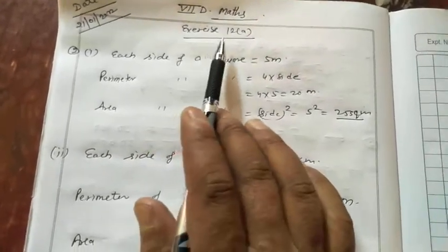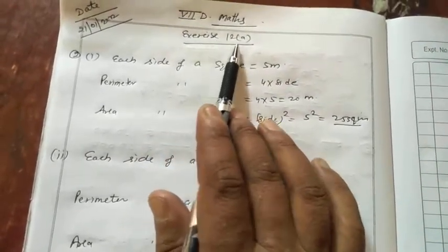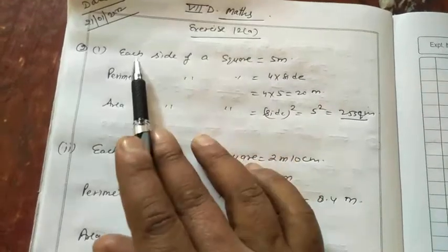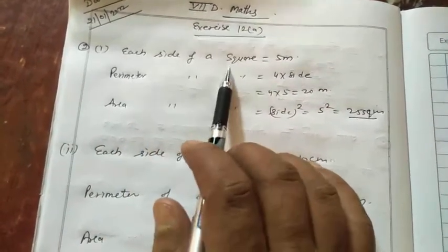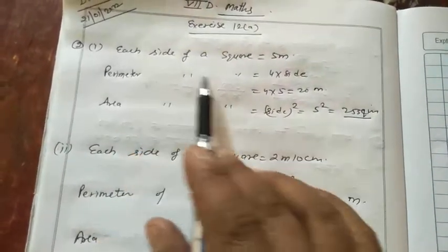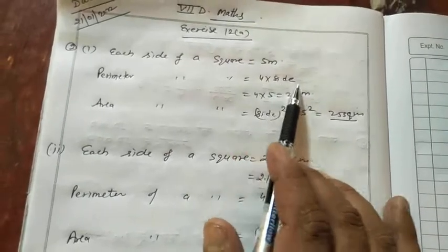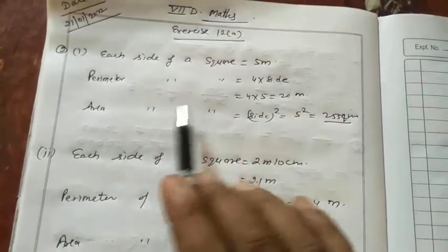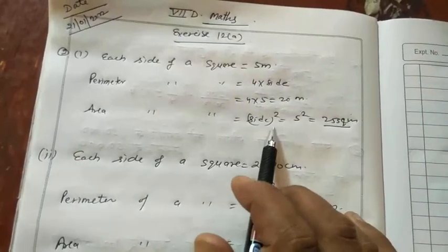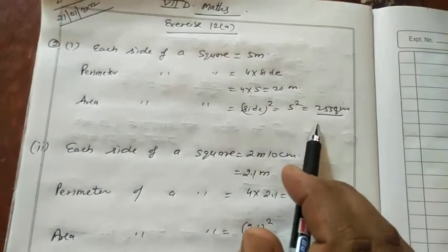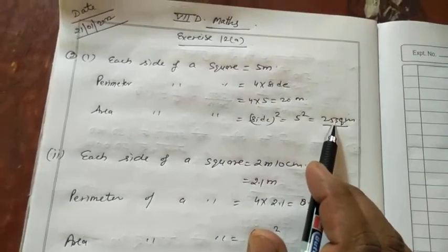Good morning students. Aaj hum 7th May exercise 12a kareenge. Each side of a square is 5 meters. Perimeter of a square: 4 into side equals 4 into 5 equals 20 meters. Area of the square: side squared equals 5 squared equals 225 square meters.